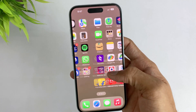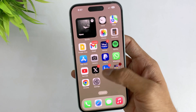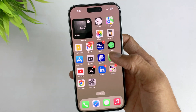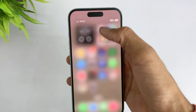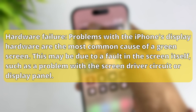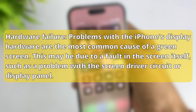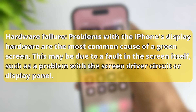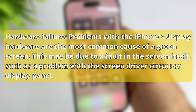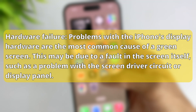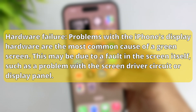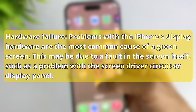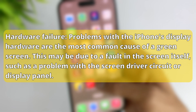Although an iPhone green screen can be caused by many reasons, there are some main reasons. Hardware failure: problems with the iPhone's display hardware are the most common cause of a green screen. This may be due to a fault in the screen itself, such as a problem with the screen driver circuit or display panel.